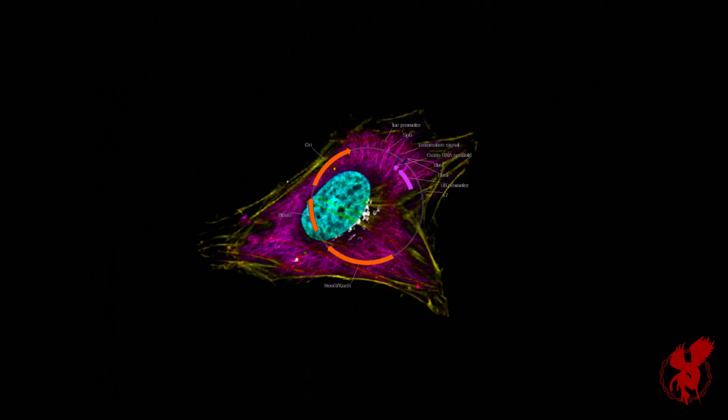Genome editing technology that utilizes a bacterial immune system is made up of three main parts: a guide RNA, Cas9 enzyme, and a template DNA. After insertion into a host genome,